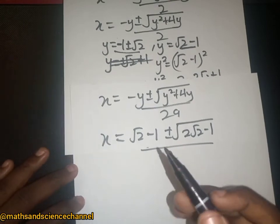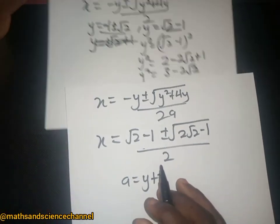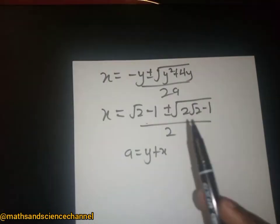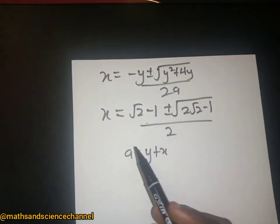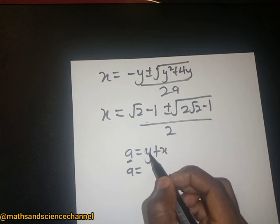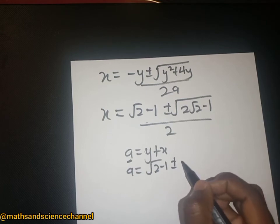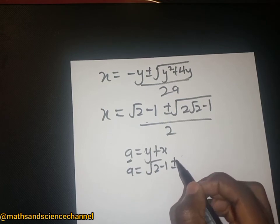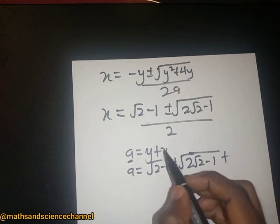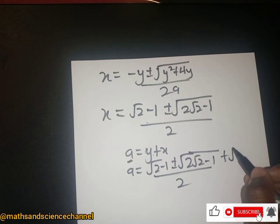From equation C, a equals y plus x. Since we want to find a, we have a equals y, which is root 2 minus 1, plus or minus the square root of (2·root 2 minus 1), divided by 2, and then plus y again, where y is root 2 minus 1.